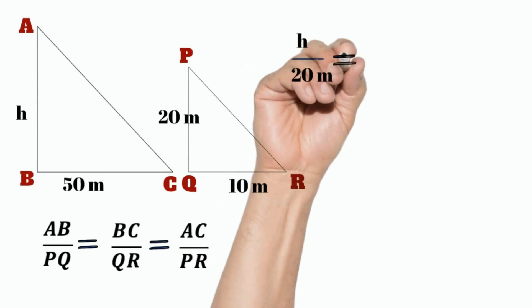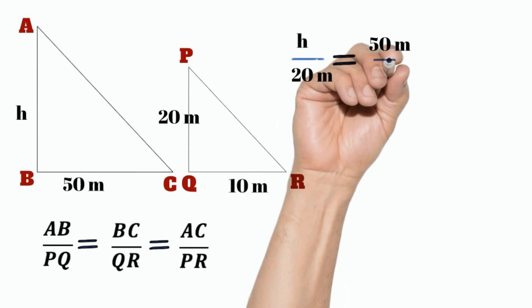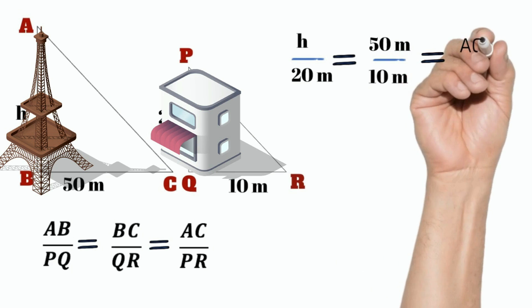Let us substitute the values. AB is h, PQ is 20, BC is 50, and QR is 10.